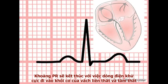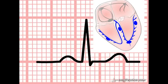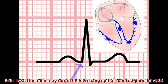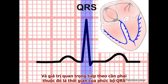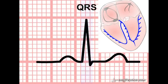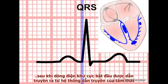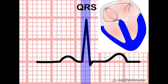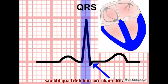The PR interval ends with the release of current into the main muscle mass of the septum and ventricles from the terminal branches of the intraventricular conducting system. On the ECG, this point is marked by the onset of the QRS complex. The duration of the QRS complex represents the time taken for ventricular depolarization to be completed following the release of depolarizing current from the conducting system. It also includes the time taken for the recording needle to return to baseline when the flow of depolarizing current in the ventricles has ceased.